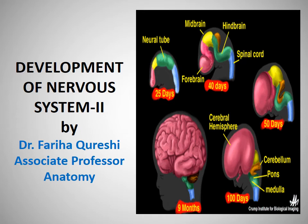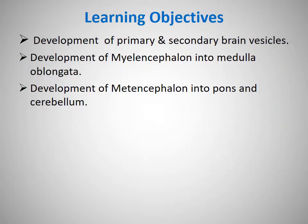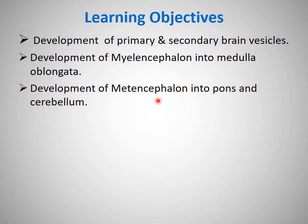Assalamu alaikum, hope all of you are fine. We continue with the second lecture of the development of the nervous system. In this lecture we will discuss the development of the primary and secondary brain vesicles, the development of the myelencephalon into the medulla oblongata, and the development of the metencephalon into the pons and the cerebellum.